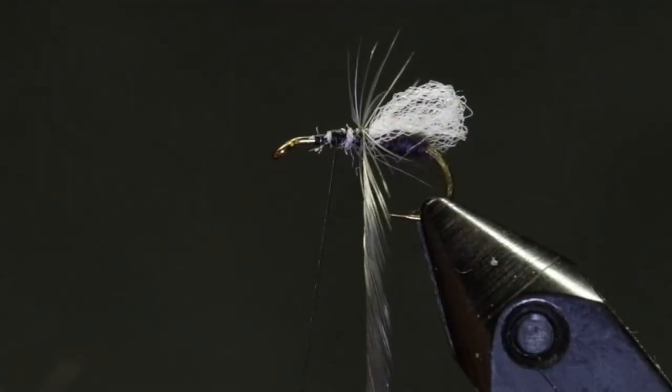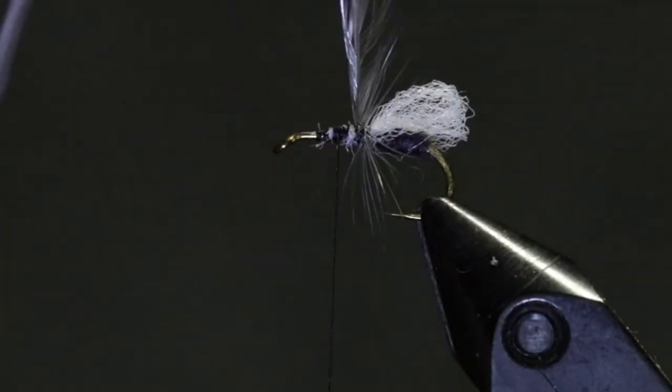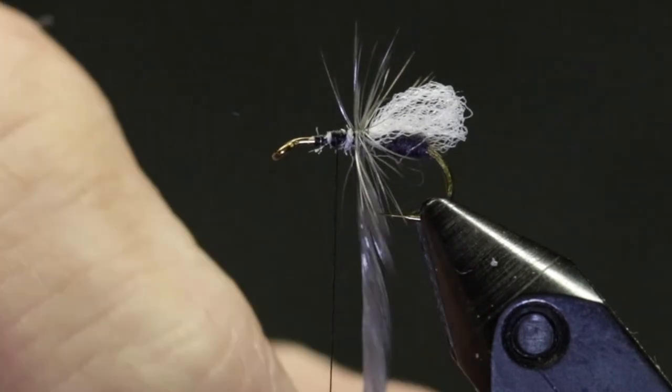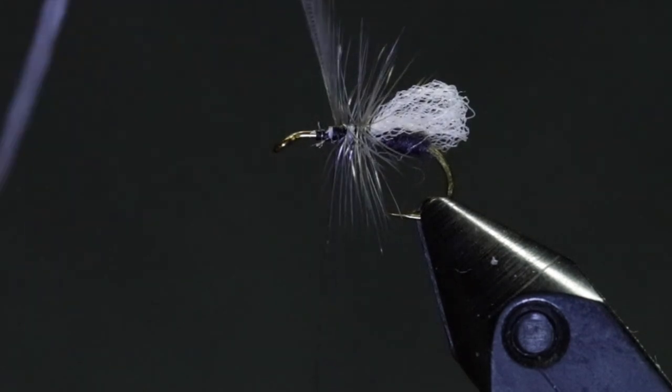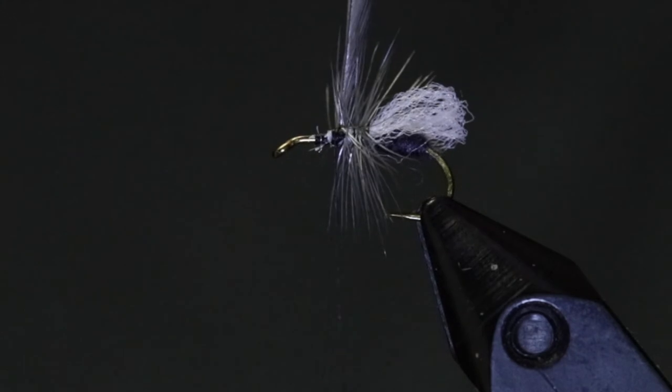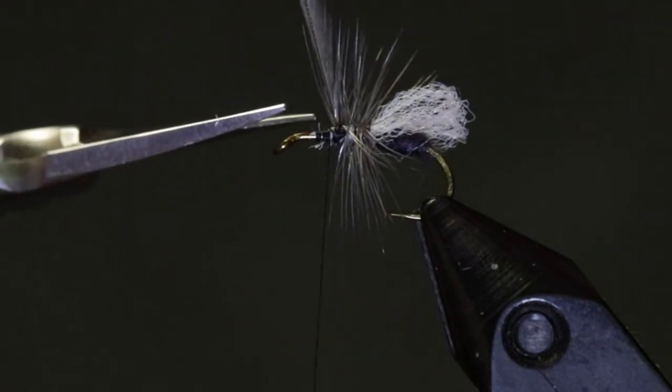Once it's secured, take two or three turns of hackle before tying off and clipping the feather. The hackle provides the fly with a high surface riding profile that's easy to see in pocket water or in a fast riffle. It's water where trout don't have time to pick and choose their food.